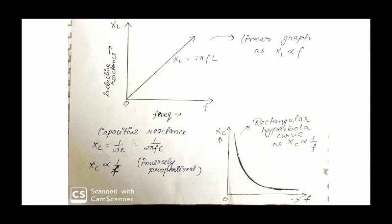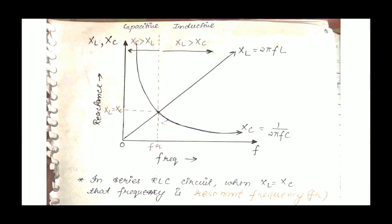Now coming to capacitive reactance: XC equals 1 upon ωC equals 1 upon 2πFC. This means XC is inversely proportional to frequency. If we plot a curve between XC and frequency, we get a rectangular hyperbola. Merging both curves, the point where both curves meet is where inductive reactance equals capacitive reactance, and that frequency is denoted as FR, the resonant frequency.